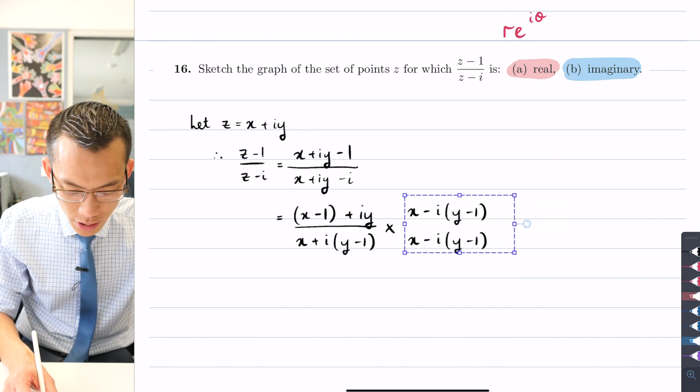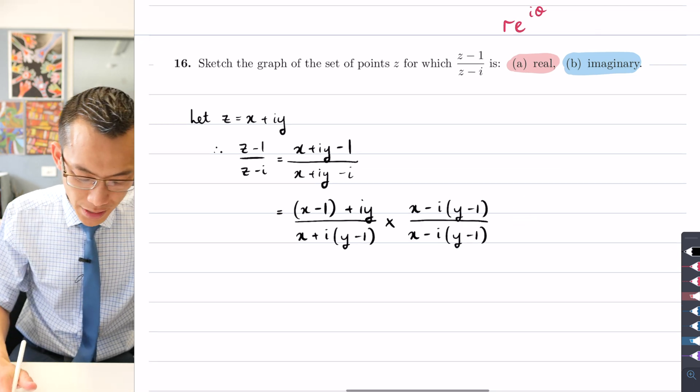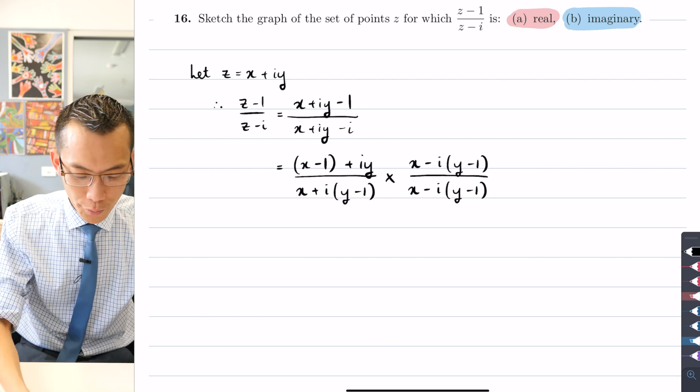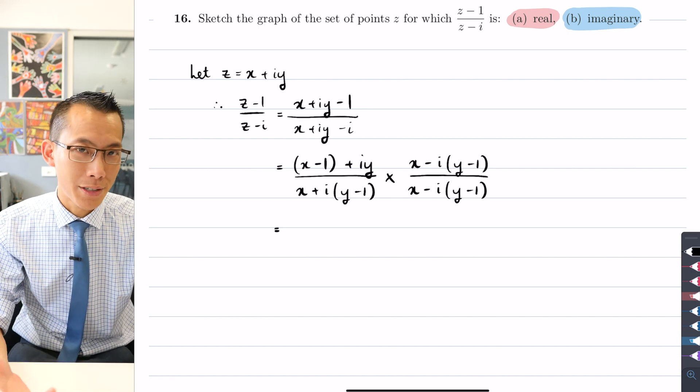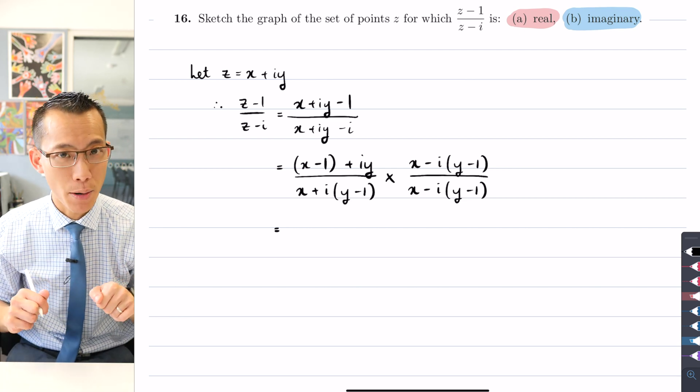So that is the conjugate. It goes up the top and the bottom so that you're not actually changing the fraction. And now what I'm going to do is I'm going to multiply through, and hopefully if I've done this right I will be able to get a real denominator, and then I can separate my real and imaginary components on the numerator.